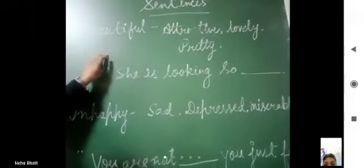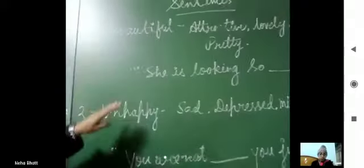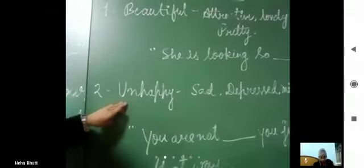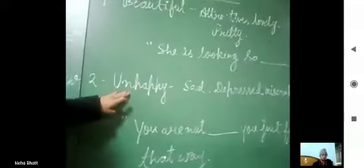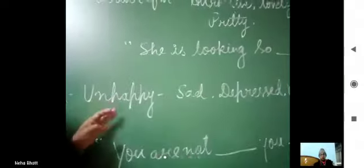So, this kind of word are called synonyms. Now, second example is unhappy. Second example of unhappy. It means sad, depressed and miserable. Clear? Unhappy means another word, similar word is sad, depressed and miserable.